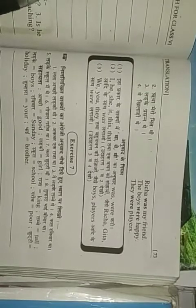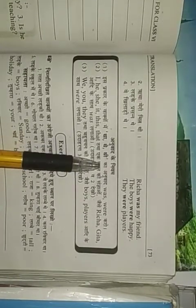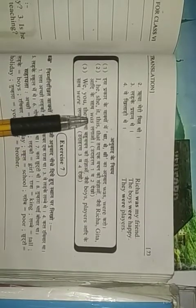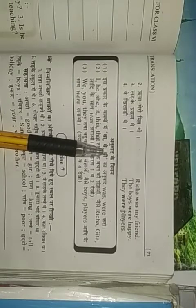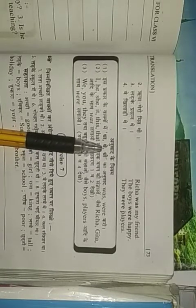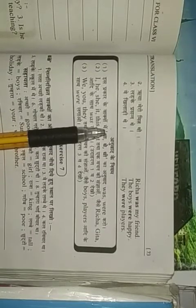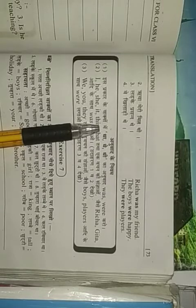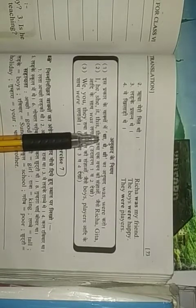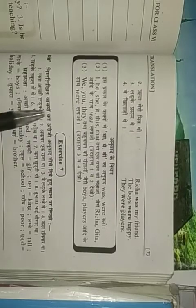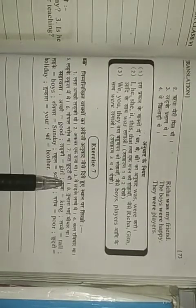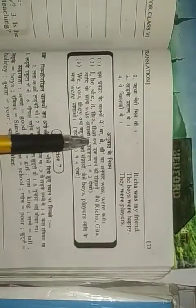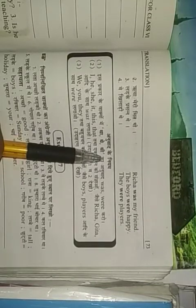Now, in the box here is written the rule and regulation of was and were. Dear students, see carefully these rules and regulations about was and were. After reading and remembering these rules and regulations, we will translate these Hindi sentences into English very easily. So, anuaad ke niyam, the rule of translation.